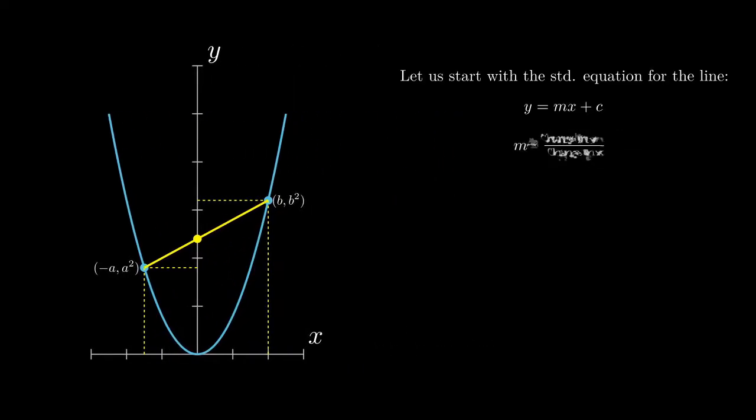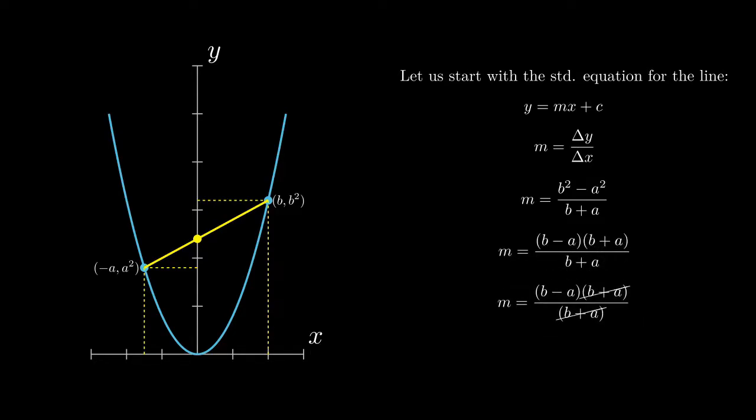Then using the coordinates negative a, a squared, and b, b squared, we solve for m the slope of the line drawn. And with a little bit of algebraic simplification, we get that the slope is equal to b minus a.